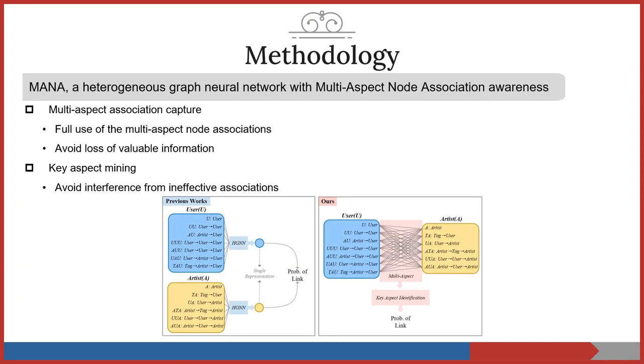To overcome those challenges, we propose MANA, a heterogeneous graph neural network with multi-aspect node association awareness. The key idea of MANA is shown in the right figure. By capturing multi-aspect associations between nodes, MANA can avoid loss of valuable information and identify key aspect associations to avoid interference from ineffective information.